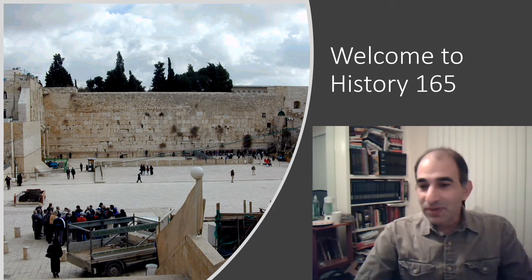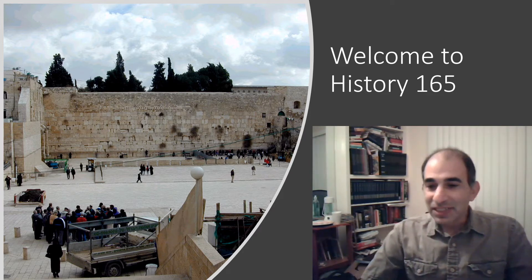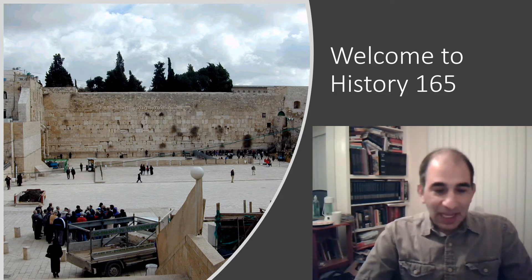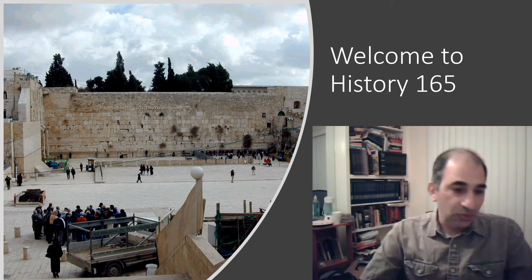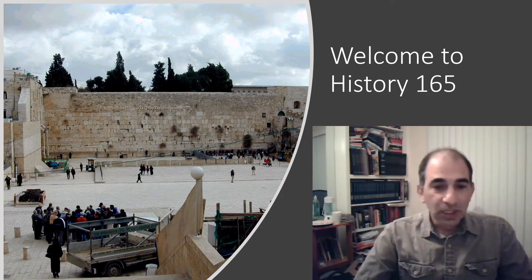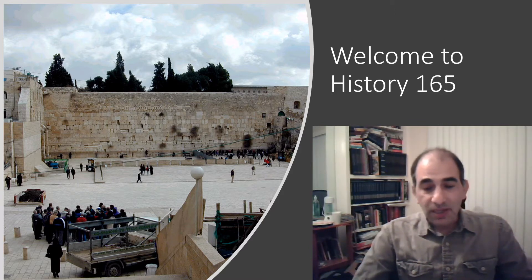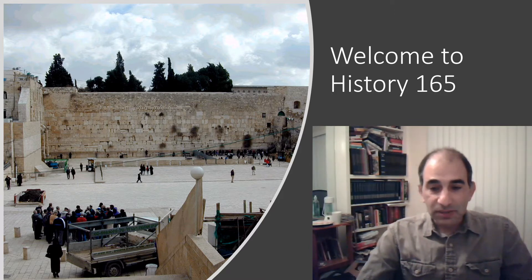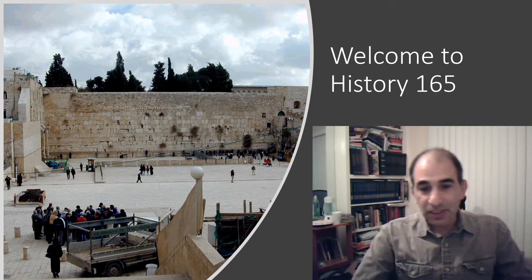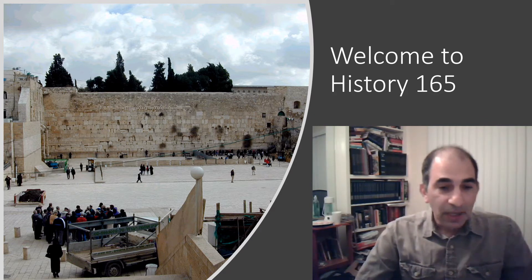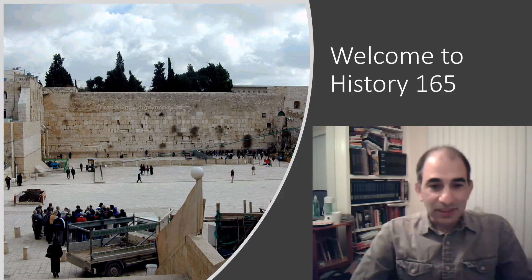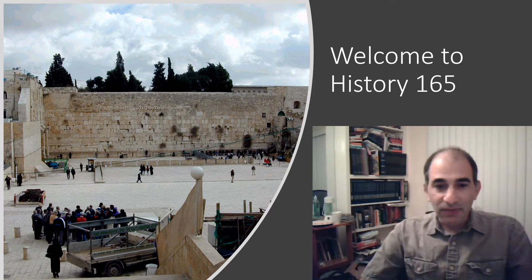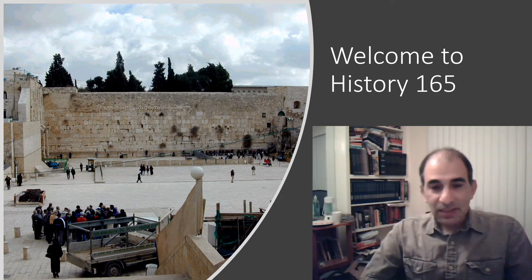We start from the very beginnings — from the dawn of civilization in Mesopotamia — and we go through the history of the ancient Hebrews in tremendous detail, talking about their culture and history and the Jewish people. We'll also get into the rise of Islam and explain the rise of the Islamic faith. This image you're seeing here is actually from Jerusalem — it's the Wailing Wall, the holiest site of Judaism — and we'll also talk about key religious sites in the Islamic faith.